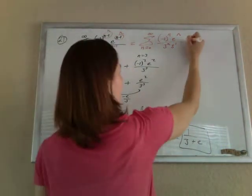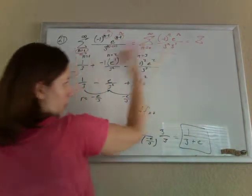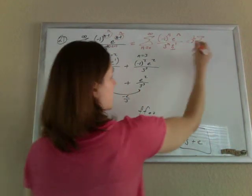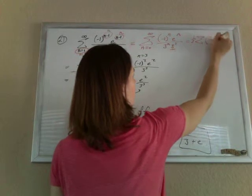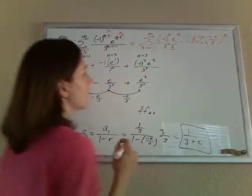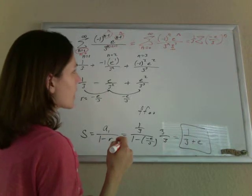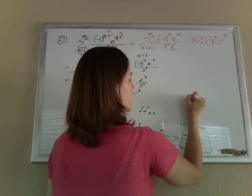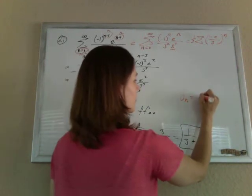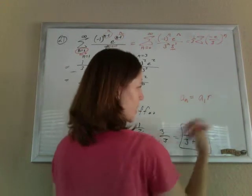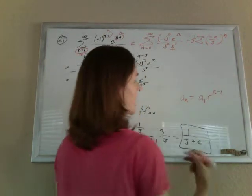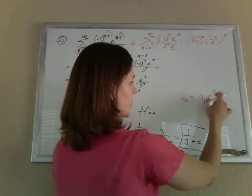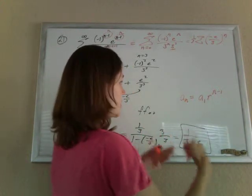And then the reason they like that is because now they can pull the 1 third out to the front, this 1 third coming out to the front, and all of these are raised to the n. So I can put them all in one big parenthesis, negative e over 3 to the n. And that's more of a geometric form. We're kind of used to the idea of a sequence being in geometric form as having the first term times some common ratio to the n minus 1, or sometimes just r to the n, depending on whether you want to start with n equals 0 or n equals 1.